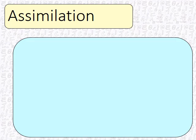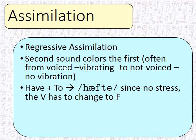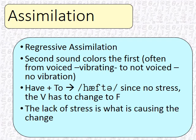The next kind of assimilation is regressive assimilation — the second sound colors the first, often voiced to not voiced, just like before. For instance, with the function words 'have' and 'to': T is not voiced, V is. But in this case, it is a regressive assimilation, so the V changes to F. So 'have to' sounds like 'hafto.' F and V are formed the same way — the only difference is the vibration in the throat. The lack of stress is what causes this change. 'Have to.' Because you want to take the stress out of these words.